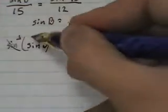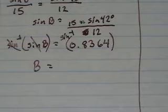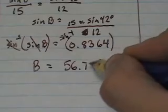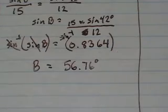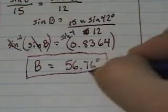And the inverse sine of 0.8364 gives me 56.76 degrees. So now I have found angle B.